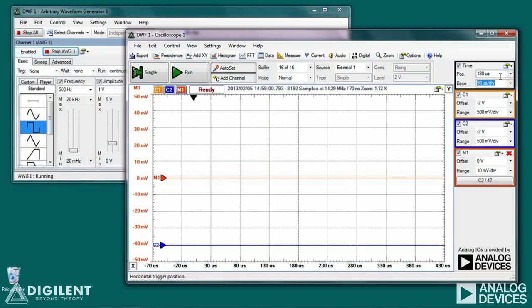On my oscilloscope, I've used a time base of 50 microseconds per division, 500 millivolts per division on both channel one and channel two, and a math channel to infer the inductor current.